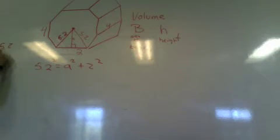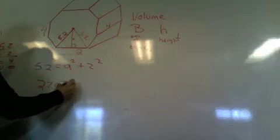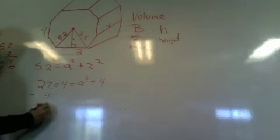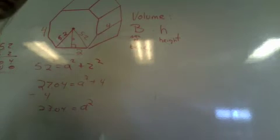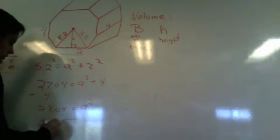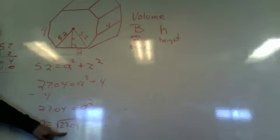5.2 squared, it's 27.04. Yep. So 27.04 is equal to a squared plus 4, subtract 4, 23.04. 23.04 is equal to a squared. So a is equal to the square root of 23.04. You can leave it like this since we're not using calculators.